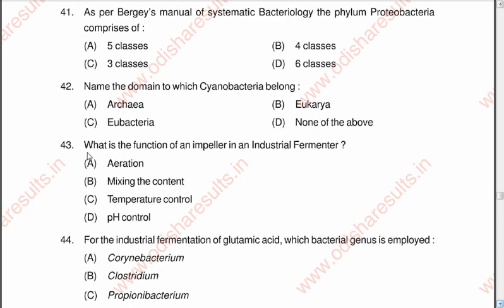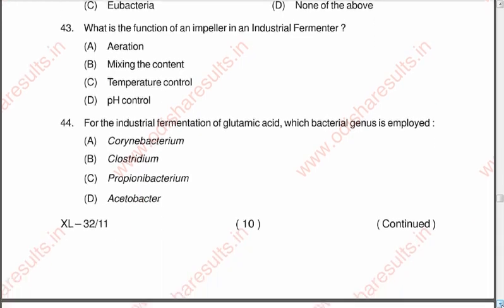Question 43: What is the function of an impeller in an industrial fermenter? Options are A aeration, B mixing the content, C temperature control, D pH control. The correct option is B, mixing the content. Question 44: For the industrial fermentation of glutamic acid, which bacterial genus is employed? A Corynebacterium, B Clostridium, C Propionibacterium, D Acetobacterium. The correct answer is A, Corynebacterium.